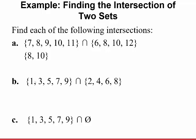Intersecting {1, 3, 5, 7, 9} with {2, 4, 6, 8} — they have nothing in common, so the intersection is the null set. Intersecting {1, 3, 5, 7, 9} with the null set — again, nothing in common, so the intersection is the null set. The intersection with the null set is always the null set itself — they have nothing in common.